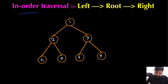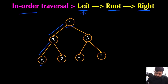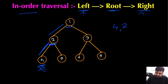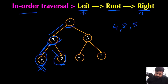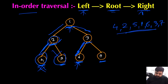During in-order traversal, we visit the left side first, then the root node, then the right node. We keep expanding left until no left node exists — so we start at node 4, then go back to root 2, then visit right child 5. After visiting all three, we go back to root 1, then repeat the same left-root-right process for the right subtree. For pre-order traversal we follow root-left-right: visit root 1, then left child 2, then left child 4, then right child 5, then back to right subtree root 3 and its children.